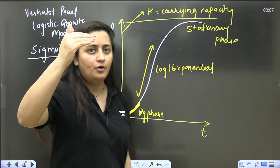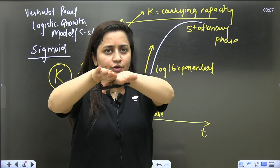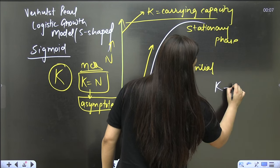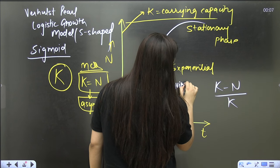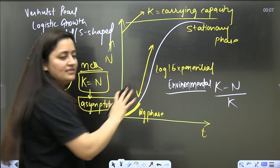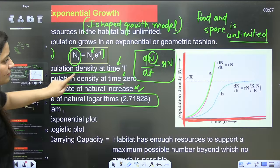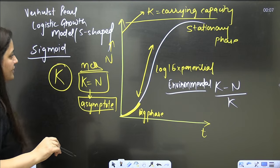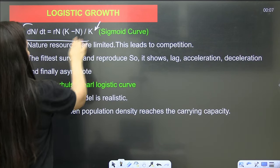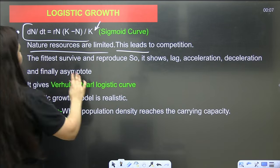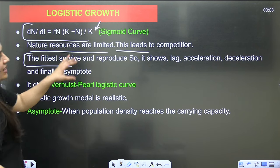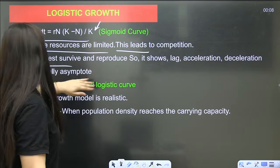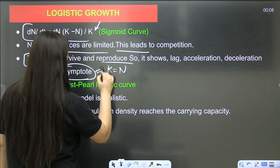When carrying capacity K equals population size N, we call it the asymptote — that is another MCQ. At asymptote, there is no further increase in population; births equal deaths, so it stays the same — the stationary phase. The environmental resistance is represented as (K−N)/K. The equation for logistic growth is: dN/dt = rN · (K−N)/K.